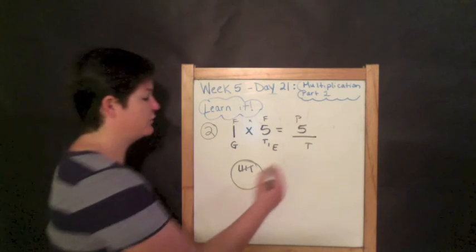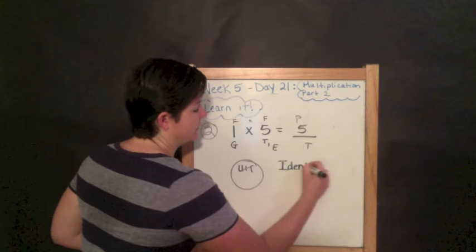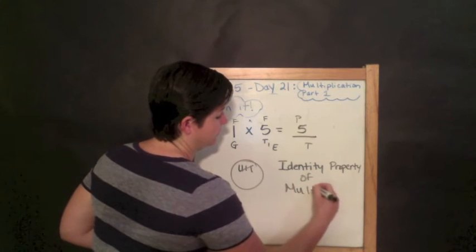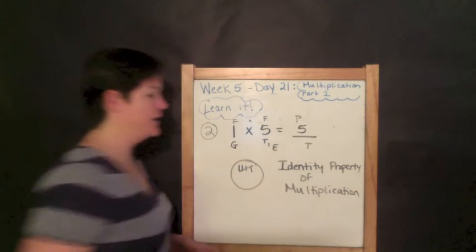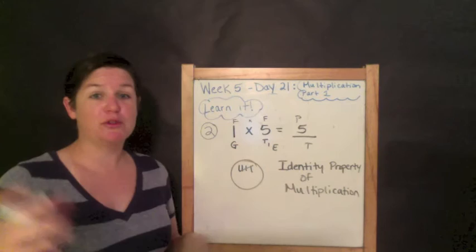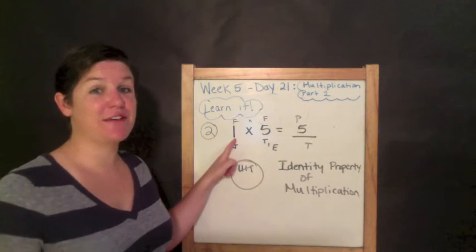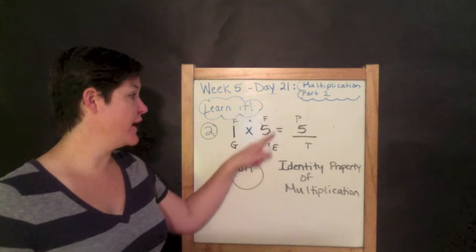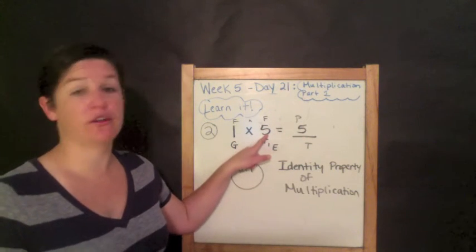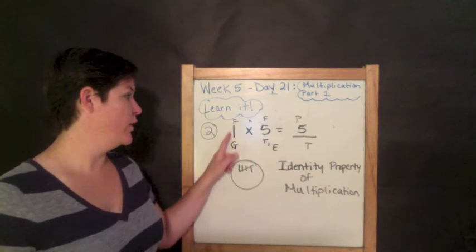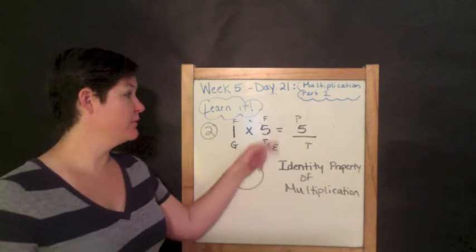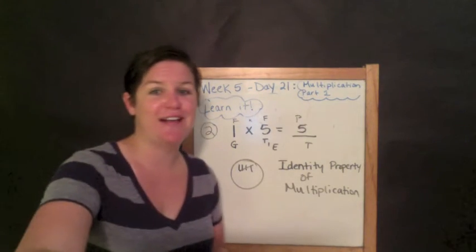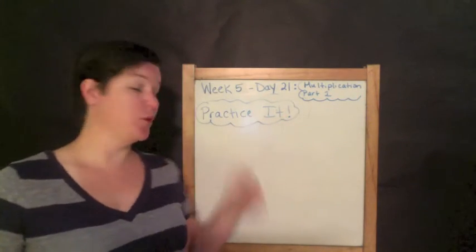I want you to write this down: this is also known as the Identity Property of Multiplication. Anytime that one is a factor, it has the identity property, because when you multiply one by any number, the product is always going to be the other factor. One times five is five; one times two is two; one times one million is one million. Identity property!